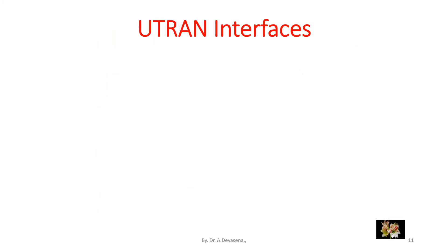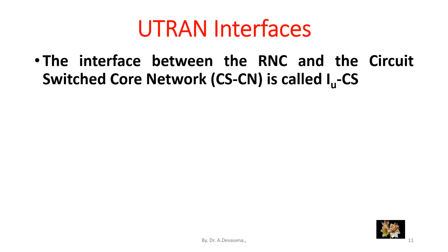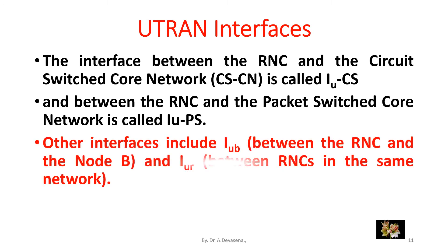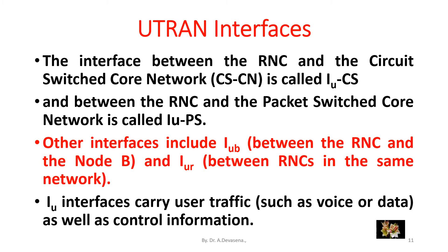The interface between the RNC, that is the radio network controller, and the circuit switched core network is called IuCS — CS represents circuit switched. And between the RNC and the packet switched core network is called IuPS — PS represents packet switched. Other interfaces include Iub between the RNC and the Node B, and Iur between the RNCs in the same network. Iu interfaces carry user traffic, such as voice or data, as well as control information.